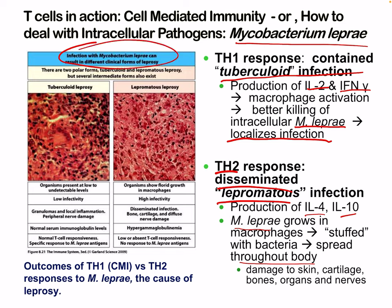Infection with Mycobacterium leprae results in clinical forms of leprosy with two polar forms: tuberculoid and lepromatous leprosy, though several intermediate forms exist. In tuberculoid leprosy, we have an effective Th1 response which keeps the infection localized — low infectivity, granuloma formation, local inflammation and some peripheral nerve damage, normal serum Ig levels, and normal T cell responses. With a Th2 response leading to lepromatous leprosy, there is florid growth, high infectivity, disseminated infection, hypergammaglobulinemia, and lower T cell responsiveness. The body can decide when it's more appropriate to use one pathway or the other, but errors can occur.